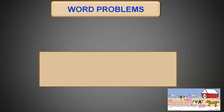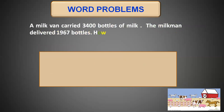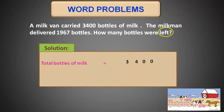Let's see another word problem. A milk van carried 3400 bottles of milk. The milk van delivered 1967 bottles. How many bottles were left? Total number of bottles are 3400, the number of bottles delivered are 1967, and we have to find the number of bottles left. The word 'left' shows that we have to do subtraction. Total bottles of milk are 3400, delivered bottles are 1967, and we will do subtraction to find the bottles left.